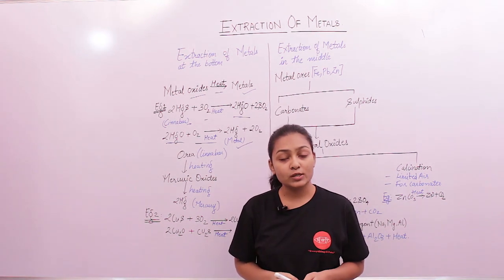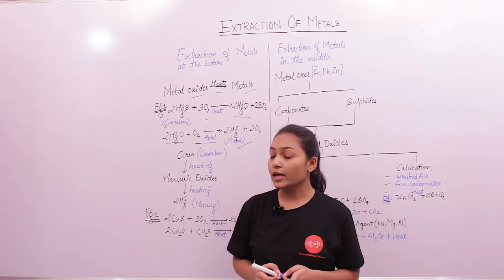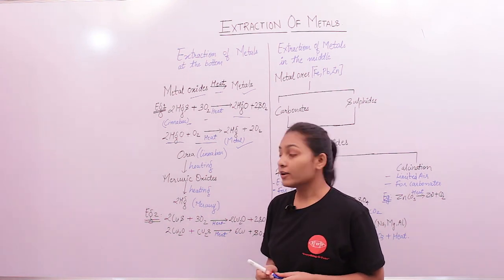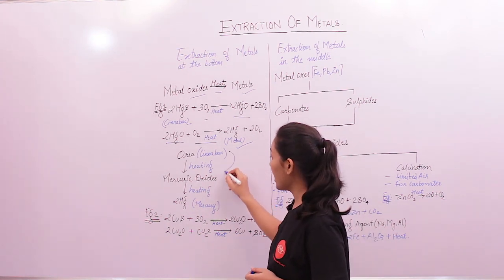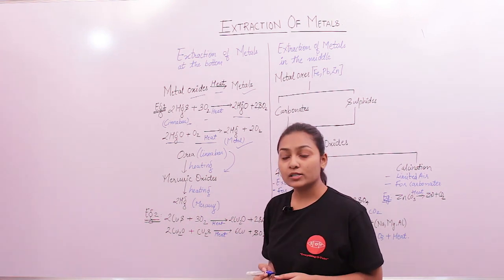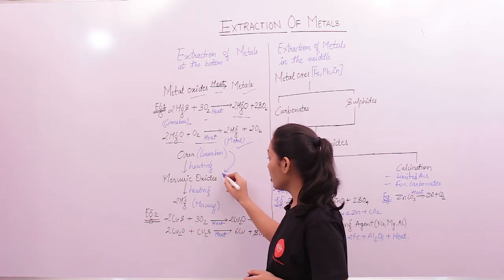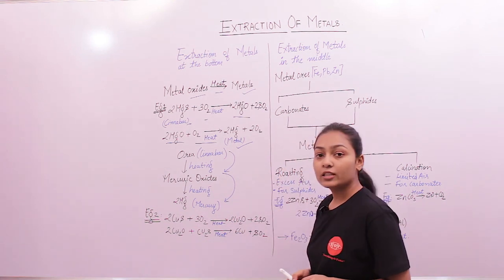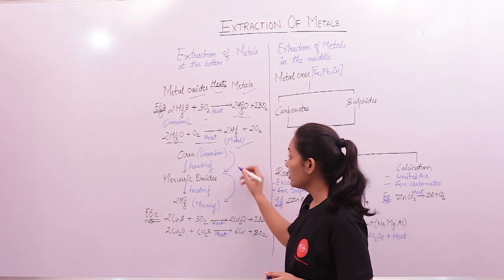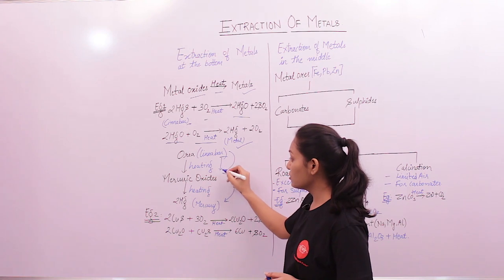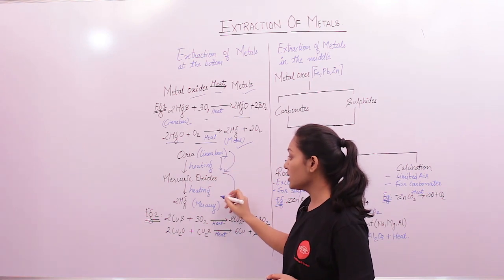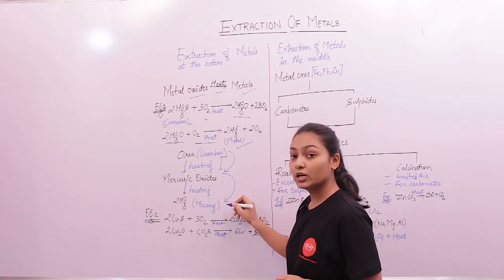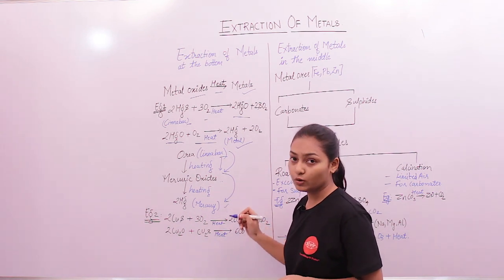To summarize: for metals at the bottom of the reactivity series, the ores can be directly heated to form metal oxides, and the metal oxides can be heated to form the metal. Cinnabar heated in the presence of oxygen gives mercuric oxide, and mercuric oxide heated again in the presence of oxygen gives mercury.